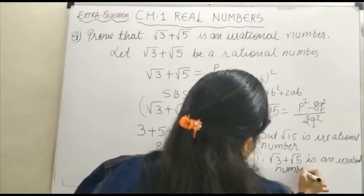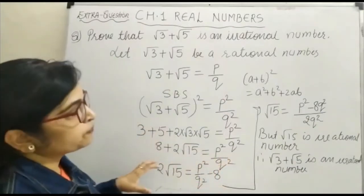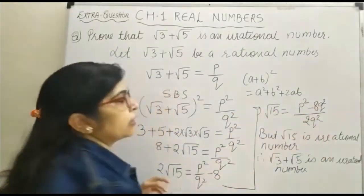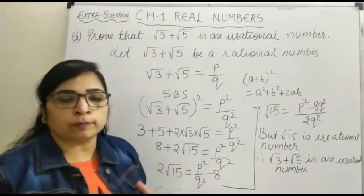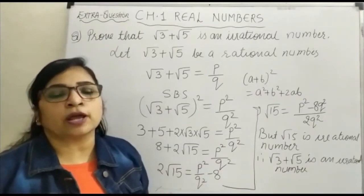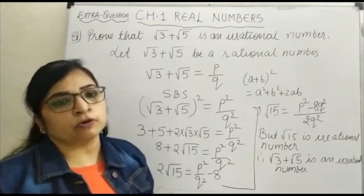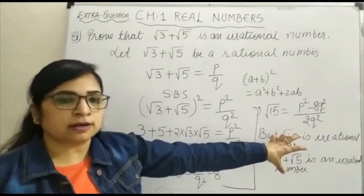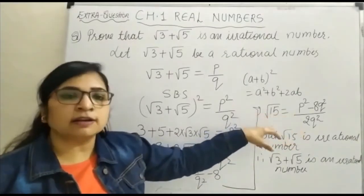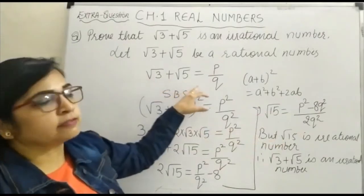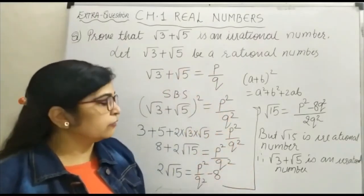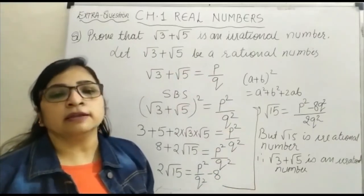Let me help you understand why this has happened. On the right-hand side, (P² − 8Q²) / 2Q² — all these terms are rational numbers. You know that rational numbers, whatever you do — whether you multiply, divide, add, or subtract — the result is always rational. So the right-hand side is rational, but the left-hand side is √15, which is irrational. A rational number cannot equal an irrational number. This wrong result arose because of our assumption that √3 + √5 is rational. Hence our assumption is false, and therefore √3 + √5 is an irrational number.